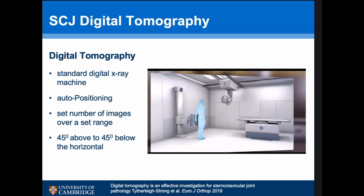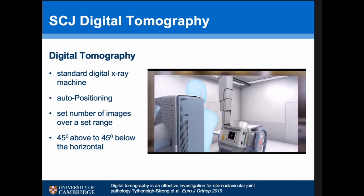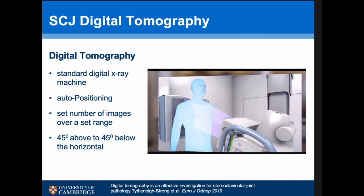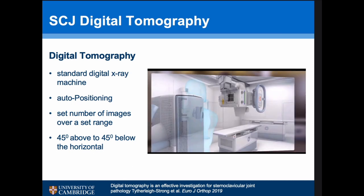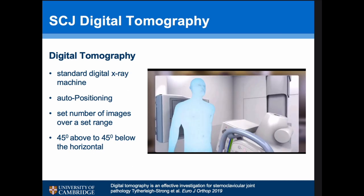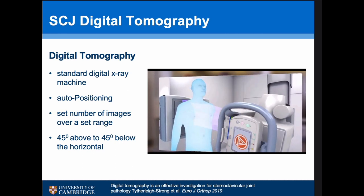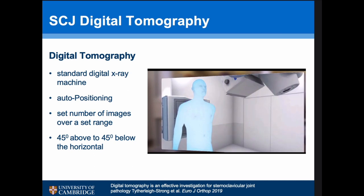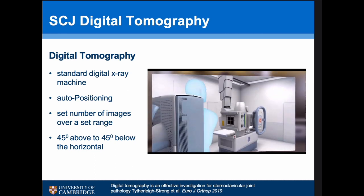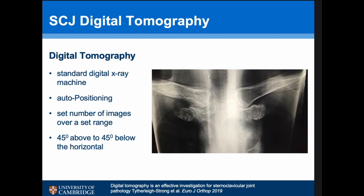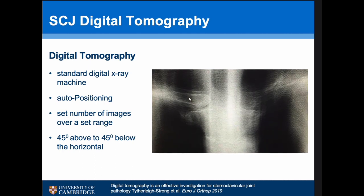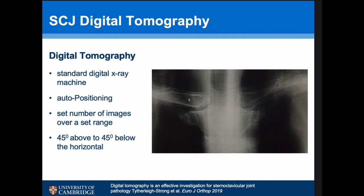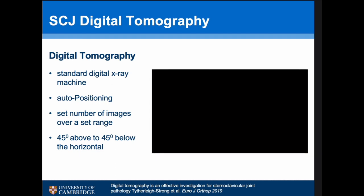The most commonly used imaging for SCJ pathology is a CT scan. In my unit we use digital tomographies, using a standard digital X-ray machine with an auto-positioning ability that takes about 40 images from 45 degrees above to below the horizontal. This is sufficient to diagnose osteoarthritis on its own, and we find it useful for post-operative patients as it exposes them to less radiation.